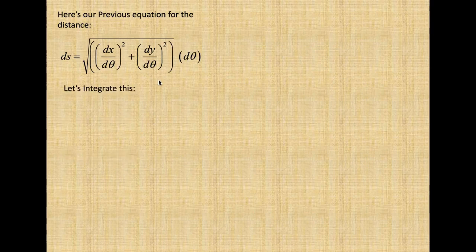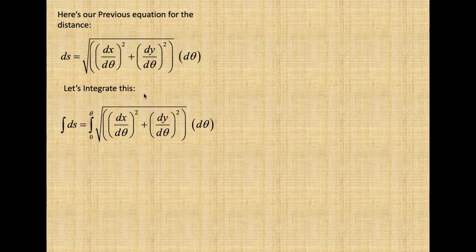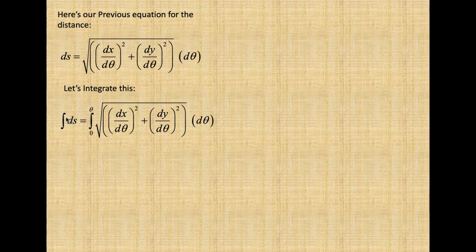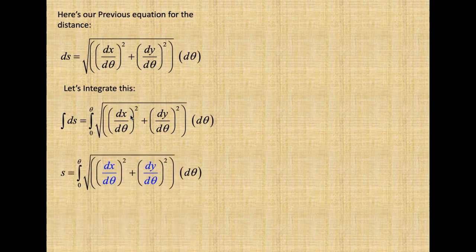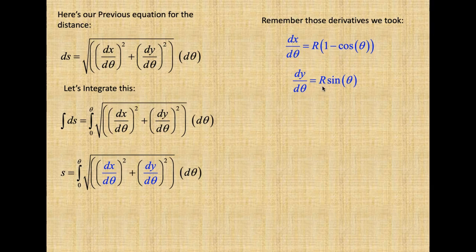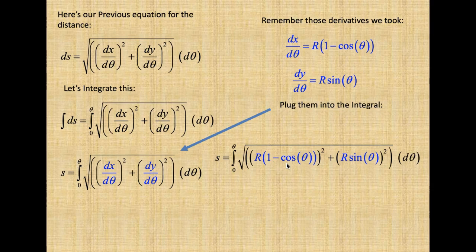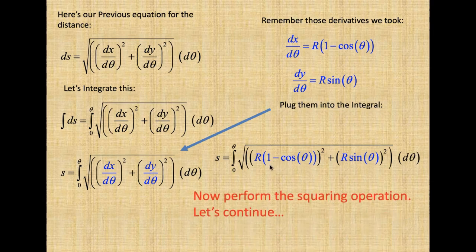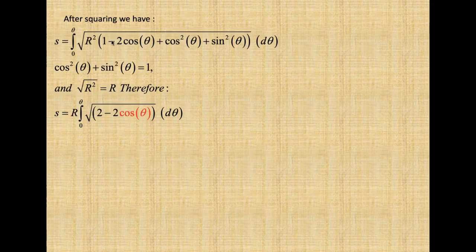Here's our previous equation. Let's integrate: the integral of ds from 0 to s equals the integral from 0 to θ. Plugging in dx/dθ = R − R·cosθ and dy/dθ = R·sinθ, we substitute those values and perform the squaring operation, squaring all terms under the square root sign.